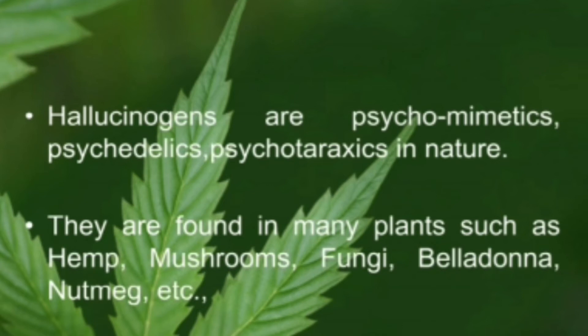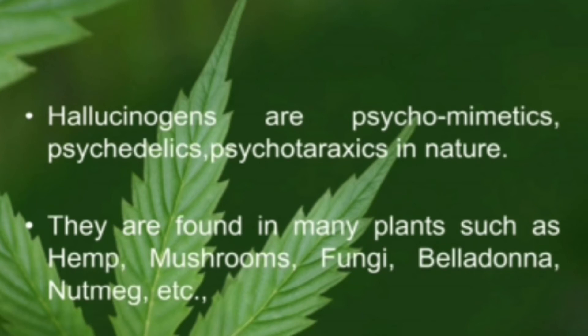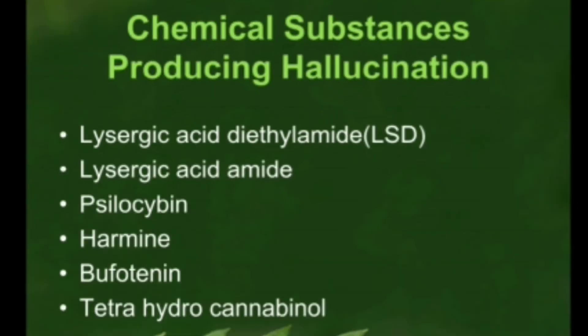Hallucinogens are present in hemp. If you look at the slide, you can see cannabis sativa leaves in the background. Some mushrooms are also hallucinogenic in nature. And nutmeg — at overdose, nutmeg also produces hallucination.